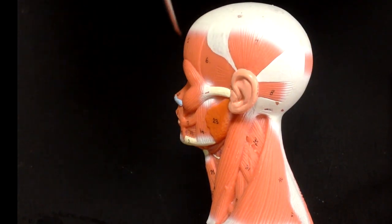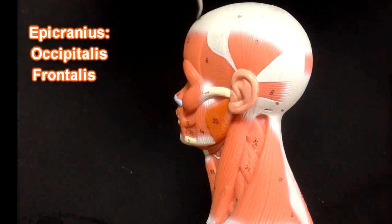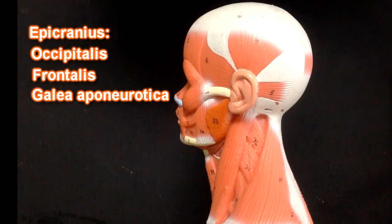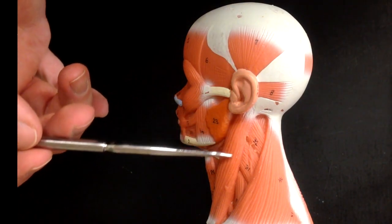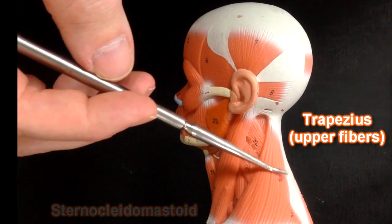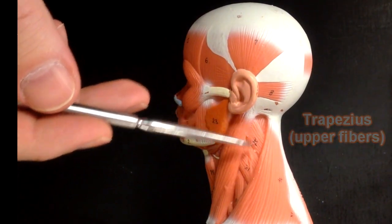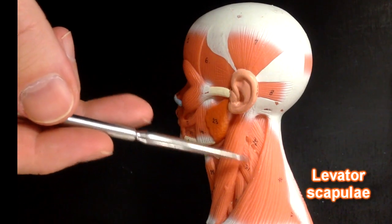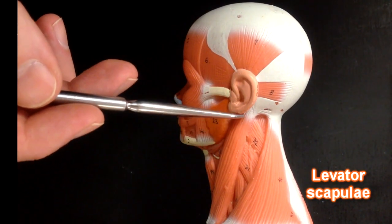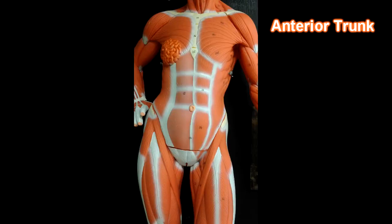Sometimes we consider all of this as one structure and we call it the epicranius — a combination of occipitalis, frontalis, and the galea aponeurotica. Down in the neck we can see the sternocleidomastoid muscle right here. We can see the upper trapezius fibers going up to the occiput. In this little area between here we can see levator scapulae, which would go to the transverse processes in the upper cervical spine. And this right here would be splenius capitis going to the skull. These muscles right here are pectoralis major.